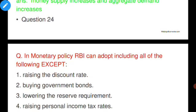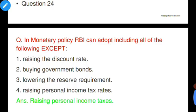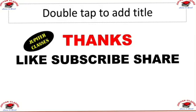Question number twenty-four: In monetary policy, RBI can adopt all of the following except — raising the discount rate, buying government bonds, lowering the reserve requirement, or raising personal income tax rate. Option D is correct — raising personal income tax rate is a fiscal policy tool, not a monetary policy tool.